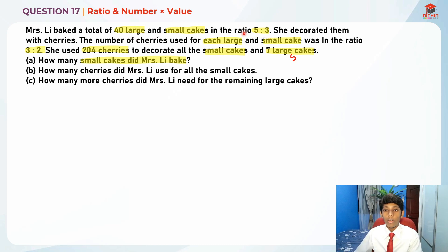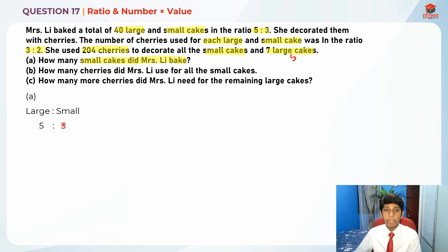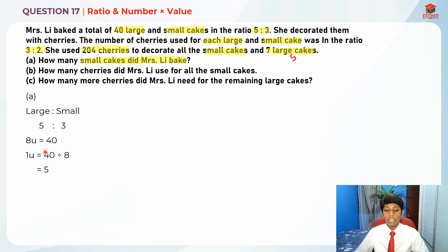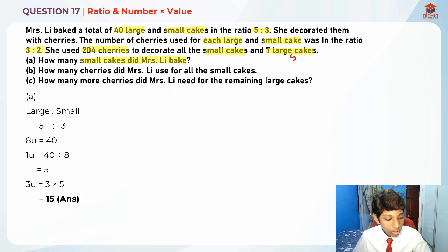We know 40 large and small cakes are in the ratio 5 to 3, so large to small is 5 to 3. That means 5 + 3 = 8 units, and 8 units equals 40, so 1 unit equals 40 ÷ 8 = 5. To find the number of small cakes, we take 5 × 3 = 15, because small cakes are 3 units. So there are 15 small cakes baked.